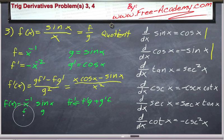Let's put all of that together and let's get our derivative. f prime of x is going to be equal to f prime times g, negative 1 over x squared, and g is sine of x.